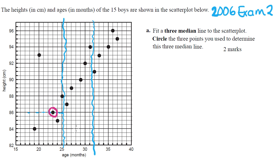For the next group, going up the page: first, second, third, fourth, fifth — the middle point is the third one. Going across the page, it's also that same point, so I'll circle that one too. For the last group, going up the page: first, second, third, fourth, fifth — the third one is the median vertically. Going across, it's still that same point, so I'll circle that one as well.